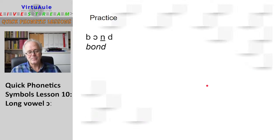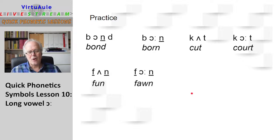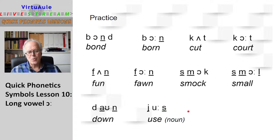Let's practice — listen and repeat: "bond," "caught," "fun" / "fawn," "smock," "dawn," "use," "York," "dawn."